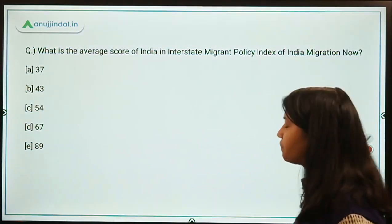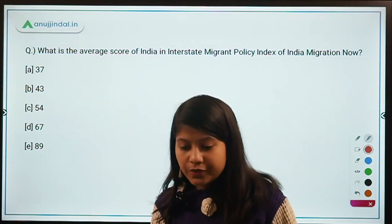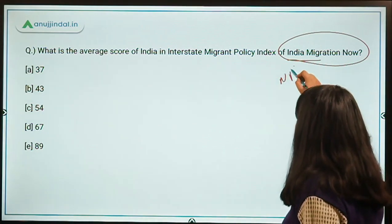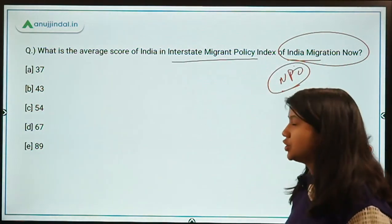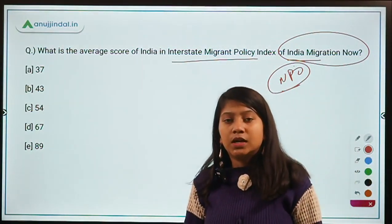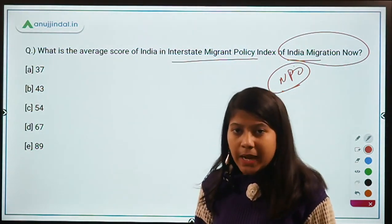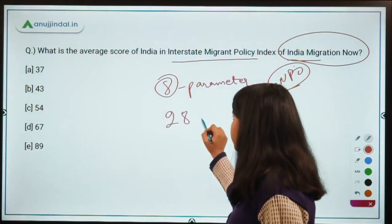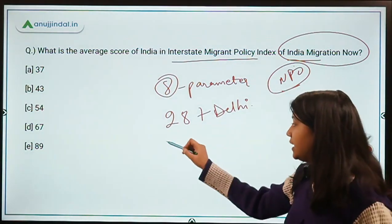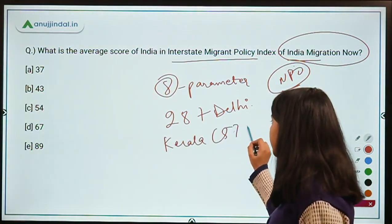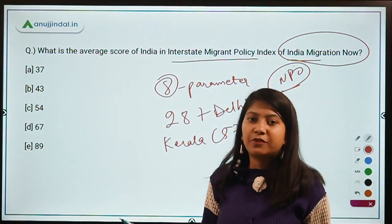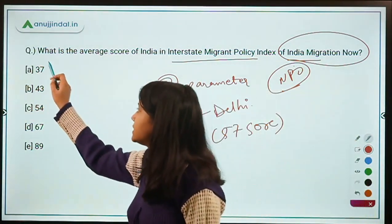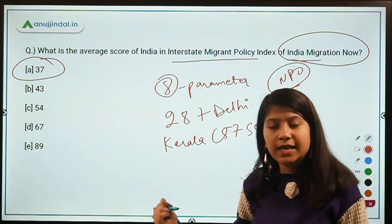What is the average score of India in the Interstate Migrant Policy Index by India Migration Now? India Migration Now is an NGO (non-profit organization) that released this Interstate Migrant Policy Index, which measures the ease of living that a state provides to migrants across eight parameters. 28 states plus NCT of Delhi were assessed. Kerala topped this index with a score of 57. The overall score of India on this index is 37.